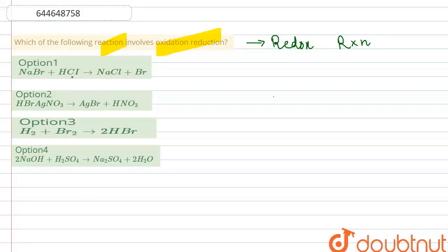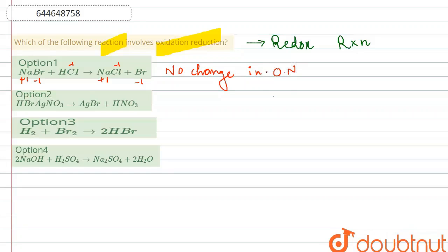In the first reaction, NaBr reacts with HCl to form NaCl and Br. We find the oxidation number of each atom. Sodium is in +1 oxidation state, Br is −1, Na is +1, Cl is −1, and Br in the product is also −1. There is no change in oxidation number for any species, so option 1 is not a redox reaction and is incorrect.